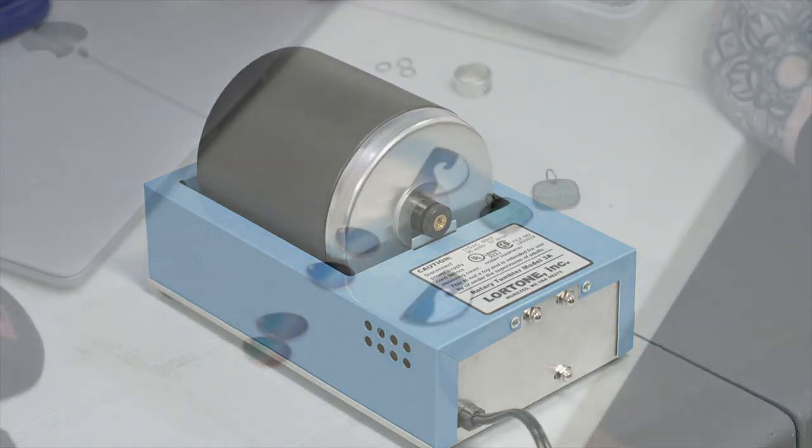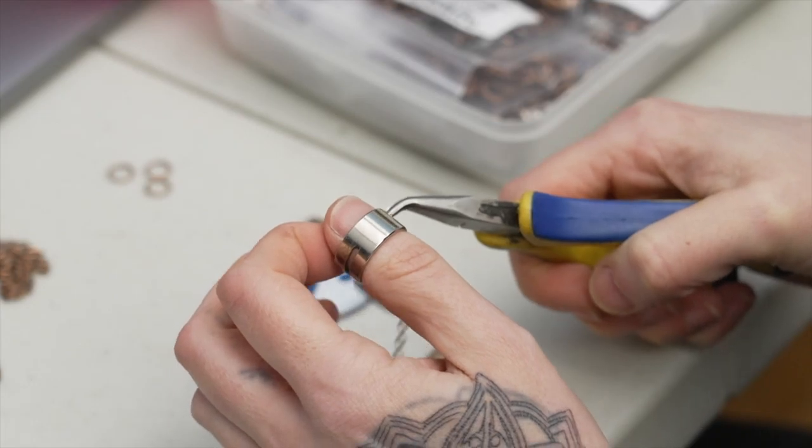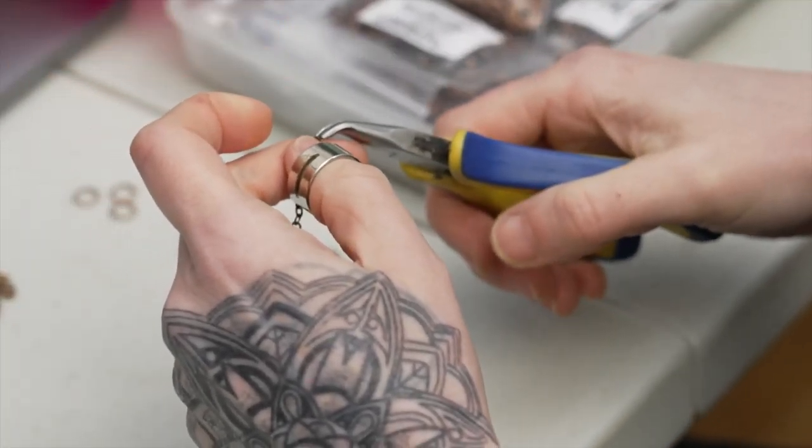The finished shiny pieces are ready for attaching the findings. Using pliers in one hand and a jump ring opener on her thumb, jump rings, chains and hoops are attached.